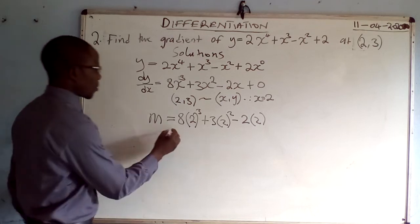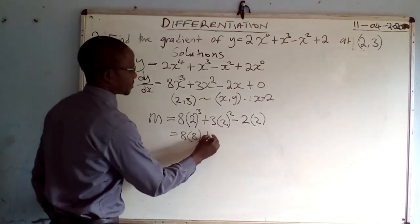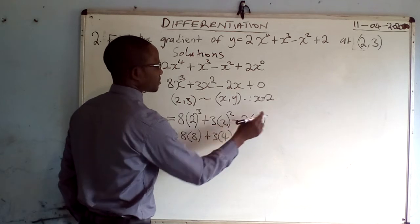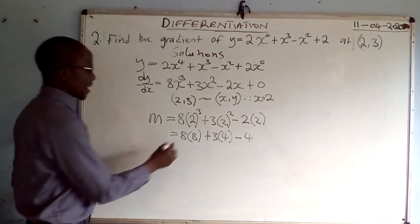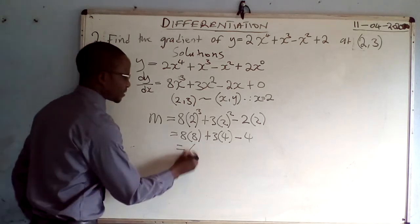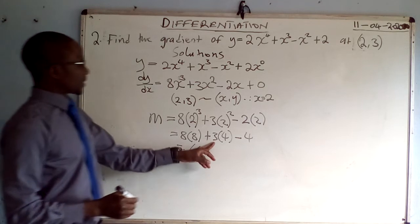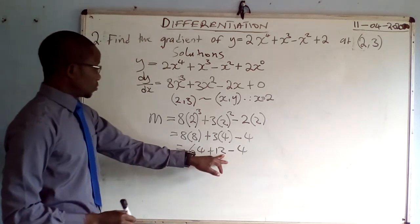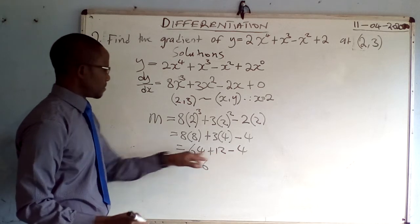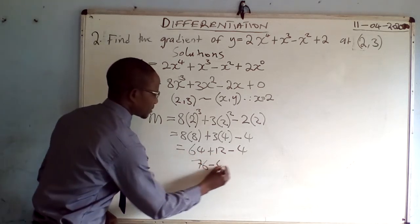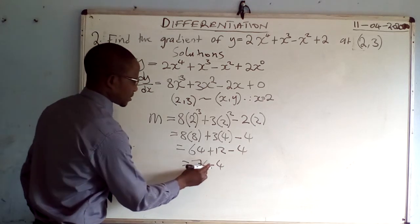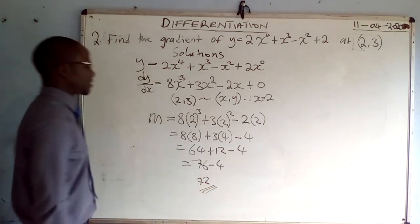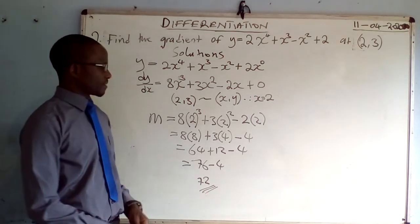Now we calculate: 2 to the power 3 is 8, so 8 times 8 is 64. Then 2 to the power 2 is 4, so 3 times 4 is 12. Then 2 times 2 is 4. So we have 64 plus 12 minus 4, which gives 72. The gradient at (2, 3) is 72.